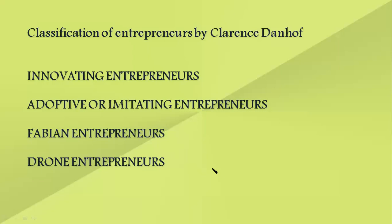The fourth type is drawn entrepreneurs. They refuse to adopt new opportunities and changes in production. They are so stubborn that even if they suffer losses, they refuse to change their methods of production, and because of this they always lag behind. Whatever new changes are introduced in the market, even if explained to them, they do not try to accept them. Innovating entrepreneurs introduce something new — a new product, technology, method of production, or new market — anything done for the first time.